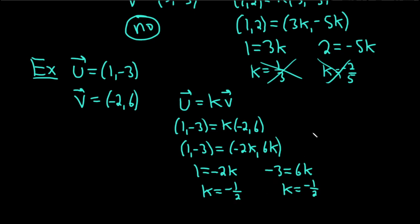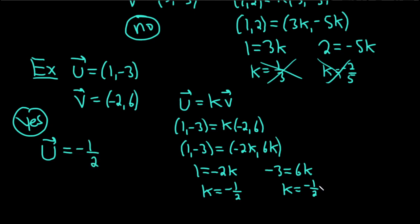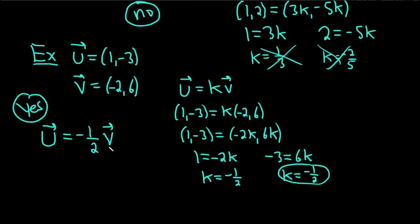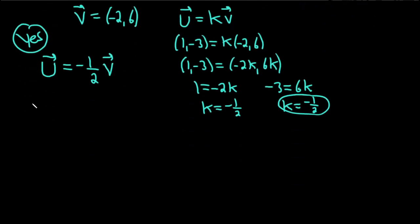Both equations give the same k value. So the answer is yes — these vectors are dependent. We can actually show it: vector u equals negative 1/2 times vector v, so they are multiples of each other and therefore linearly dependent. It's a really nice, simple technique when you have two vectors.